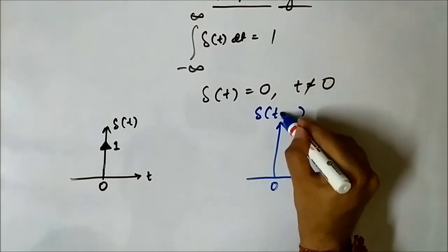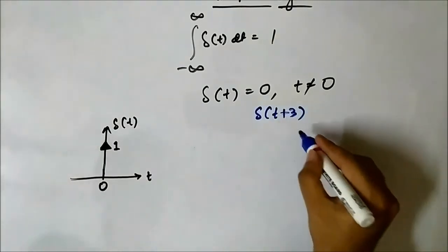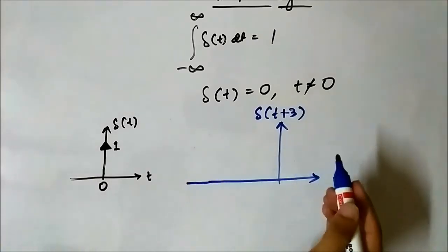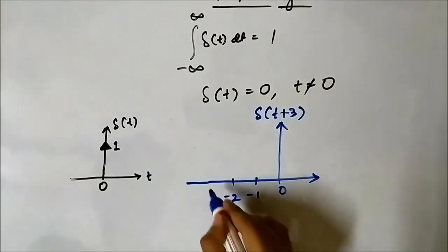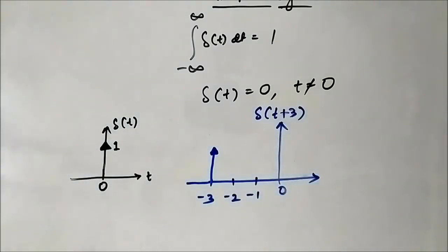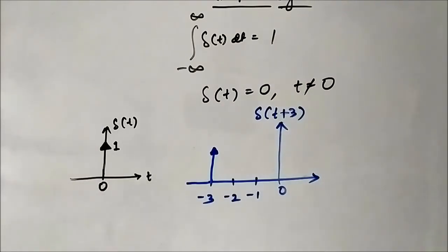If we want to perform the shifting in the other direction, let us say delta(t) plus 3. The plus sign means the shifting will take place to the left, by 3 units. This is delta(t plus 3). This covers the basic shifting operations performed on the basic test signals: the step, ramp, and impulse signal. I hope you liked this video — please subscribe to Engineering Tutorial for more videos related to electrical, electronics, instrumentation, and communication engineering. Thank you very much.